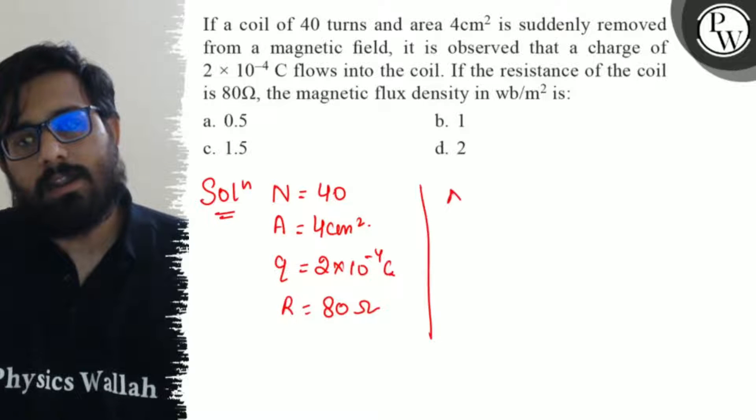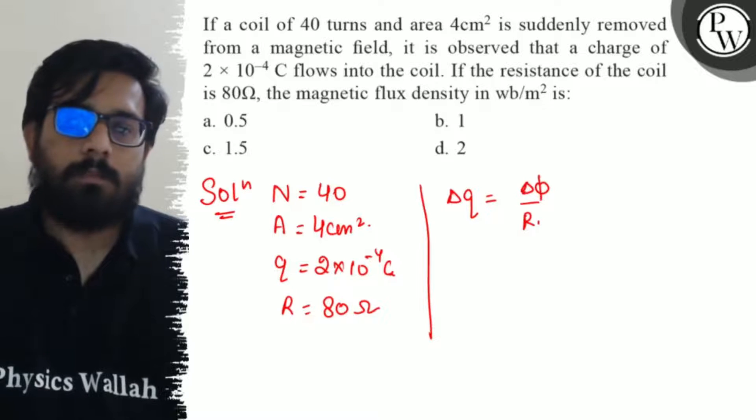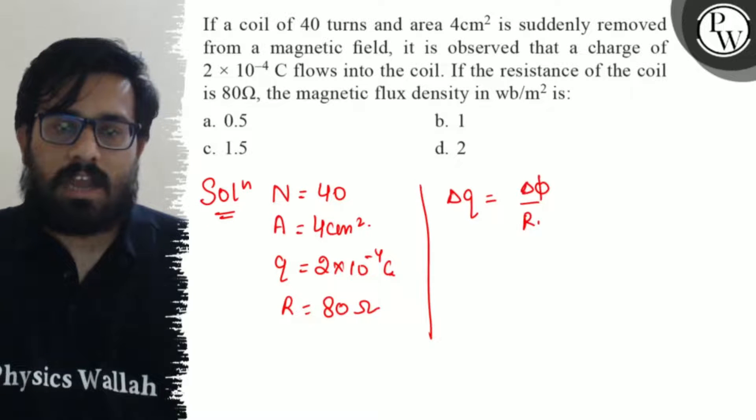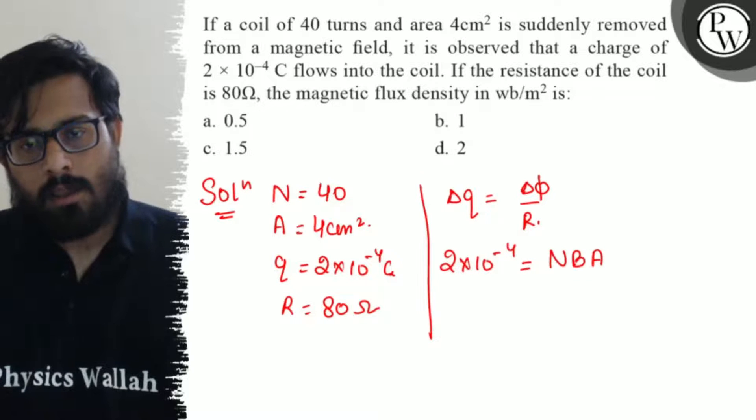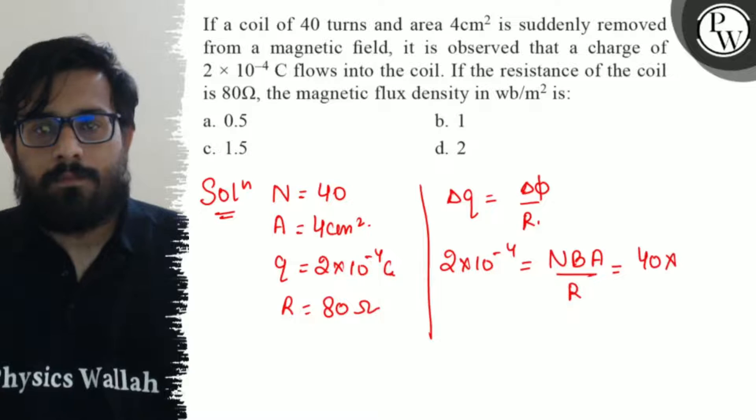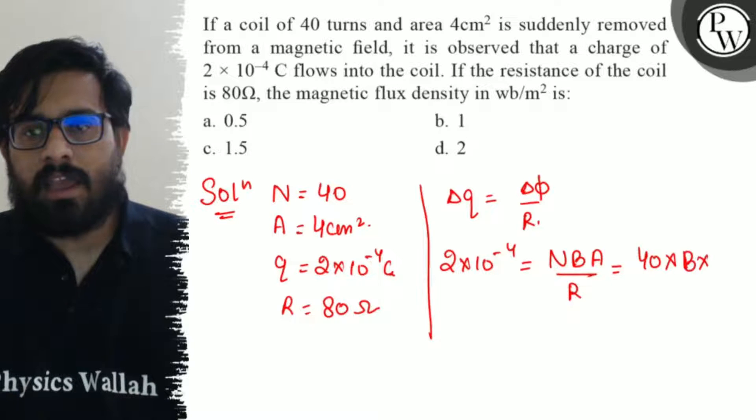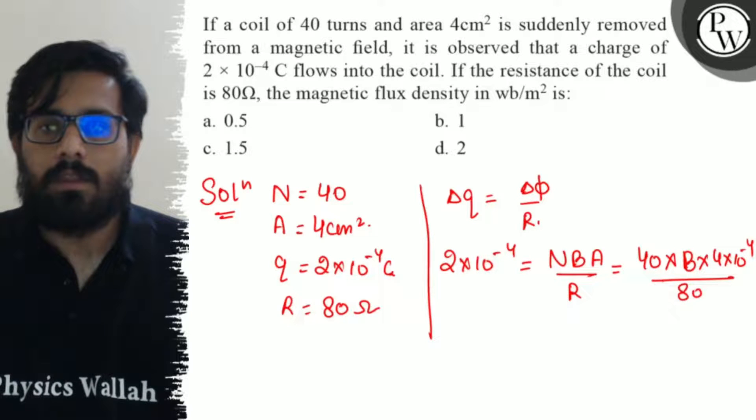Now from the formula we know that Δq = Δφ/R. So the charge we have, 2×10⁻⁴, equals NBA/R, where number of turns is 40, we have to calculate the value of B, area is 4×10⁻⁴, and resistance is 80.